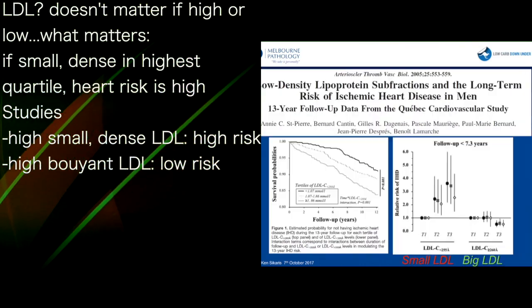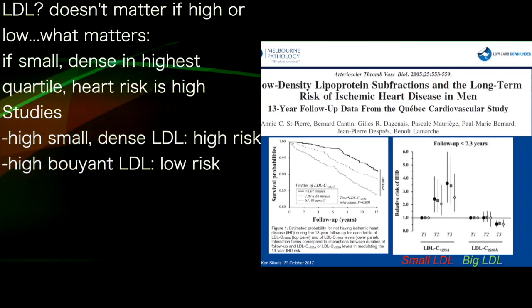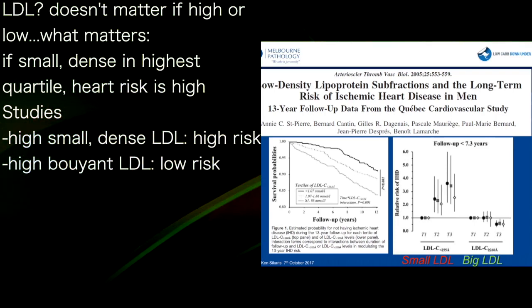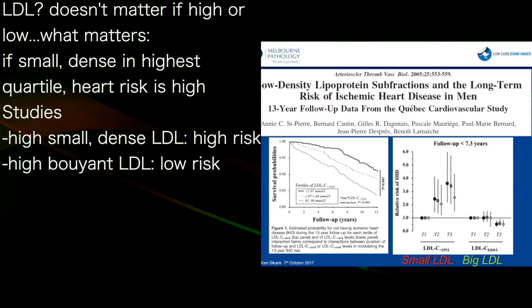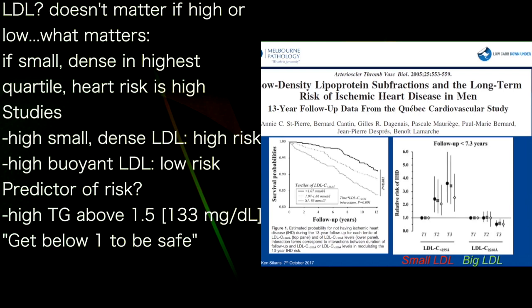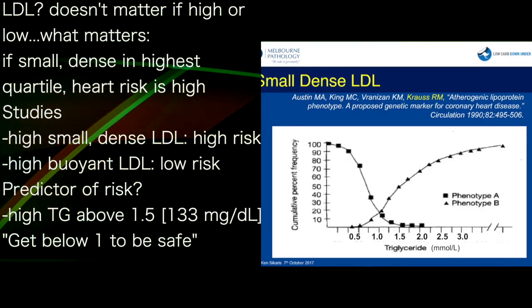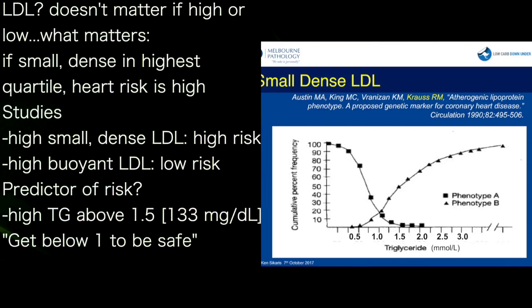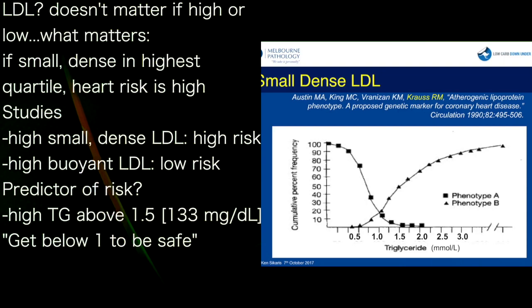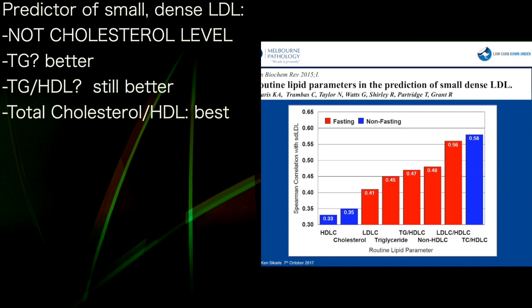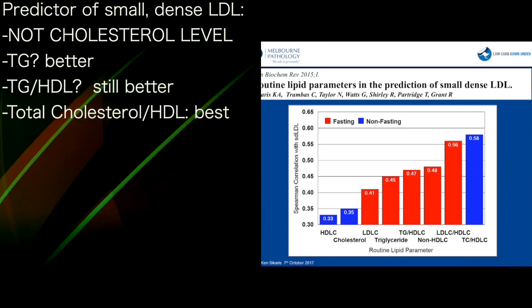Another study from Jean-Pierre Dupré's group: small dense LDL increases risk, large buoyant LDL shows no increase in risk — if anything, there's a decrease in risk. And what predicts small dense LDL? High triglycerides. Once you get above 1.5, it's odds-on you've got lots of small dense LDL. You need to get below one to be sure you've got none. Now, does the cholesterol level predict it? No — it's hopeless.